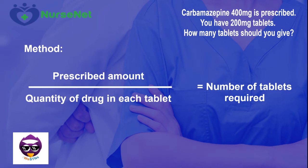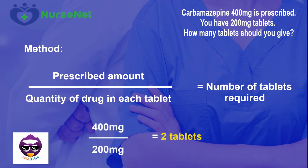To answer this question, we will divide the prescribed amount by the available stock dose to give us our answer. So we have 400mg prescribed divided by the available stock dose of 200mg tablets, giving us the answer of two tablets.